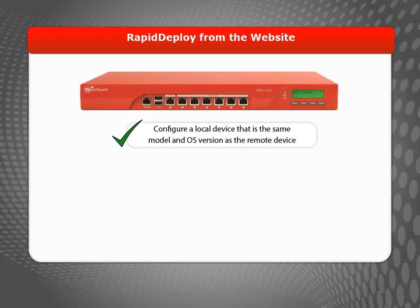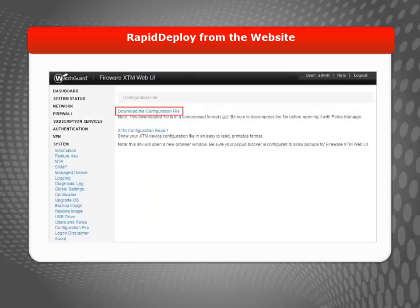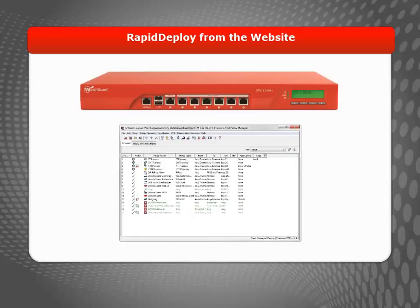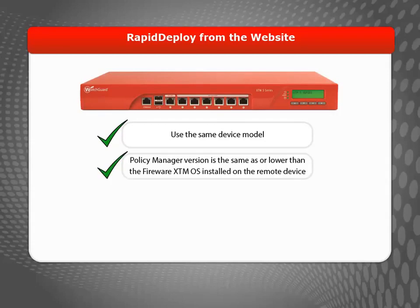Before you create the configuration file, check the product details page for the device you want to deploy and check which OS version it was manufactured with. The recommended method is to configure the local device — which must be the same model and run the same OS version as the remote device — with the settings you want the remote device to use. You can then use the Fireware XTM web UI to save the configuration to a local file. If you want to use Policy Manager to save a configuration file for the same device model, you can do that as well.